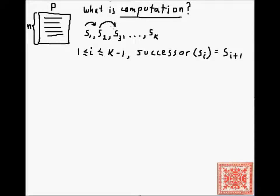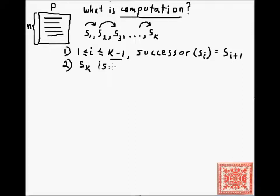So S2 is the successor of S1, S3 is the successor of S2, and Sk is the successor of the previous snapshot Sk minus 1. This is the first assumption. The second assumption, which is very important, is that Sk is terminal.